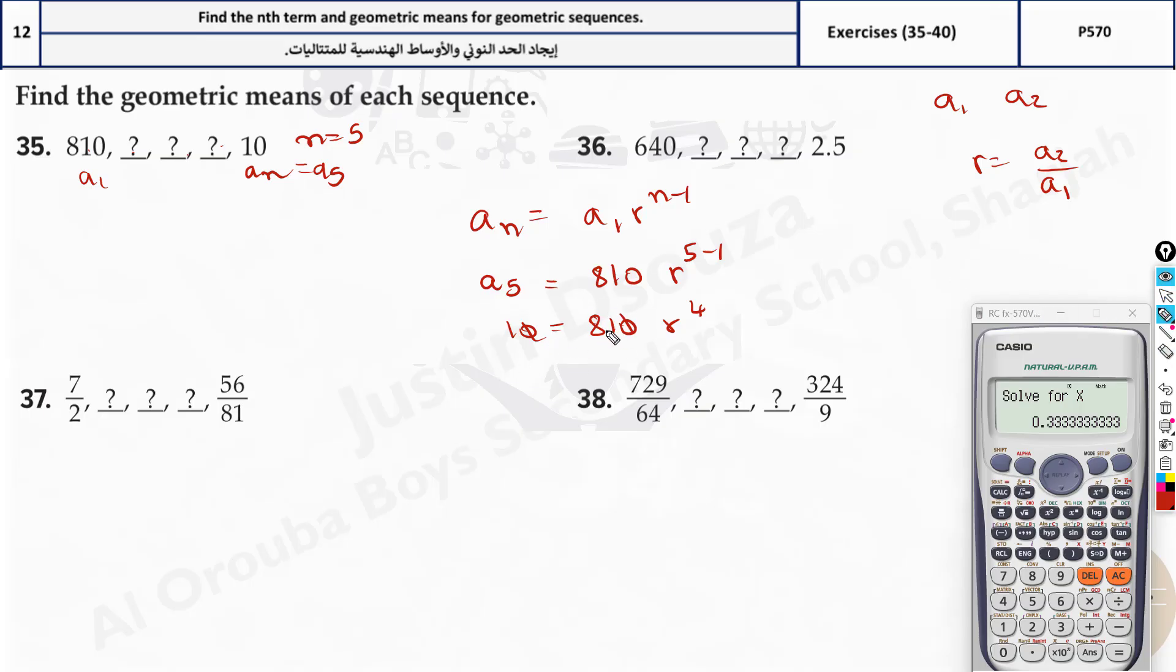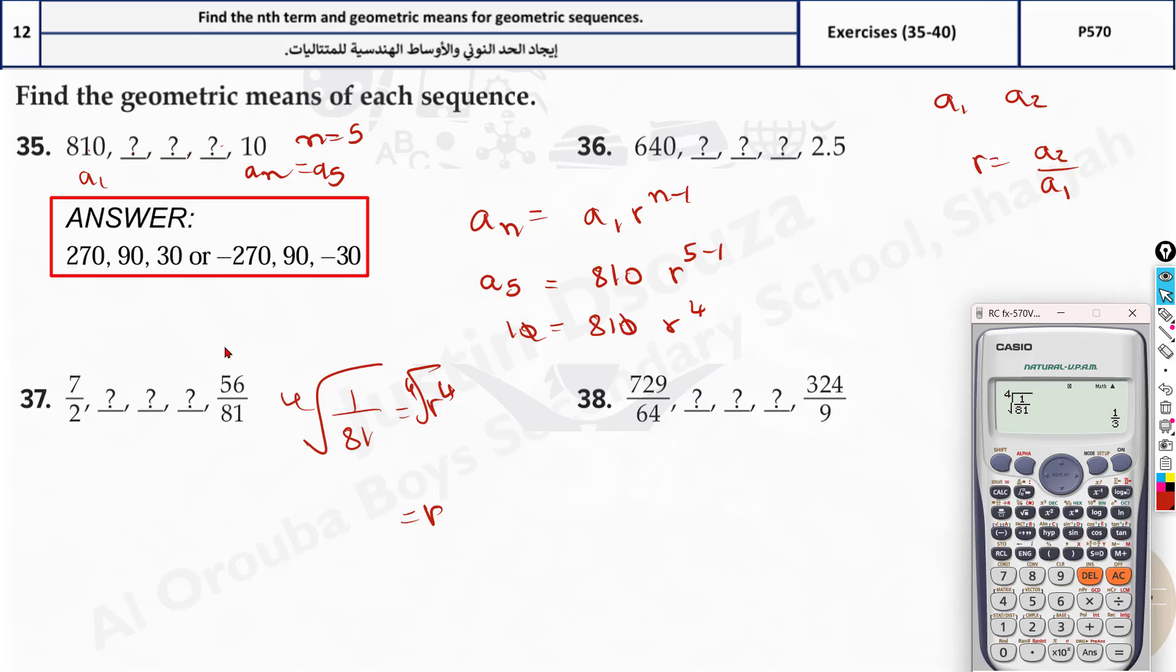Now I'll show you the calculation without the calculator method, just the algebraic calculation. Take 81 to the other side. It will be 1 divided by 81 equals r to the power 4. Take radical 4 on both sides. You can put this in the calculator directly. So shift and this symbol, use your radical, it's 4, and press next. It's 1 divided by 81. You know, 3 to the power 4 is 81, so it should be 1 by 3 itself. So that's the answer.